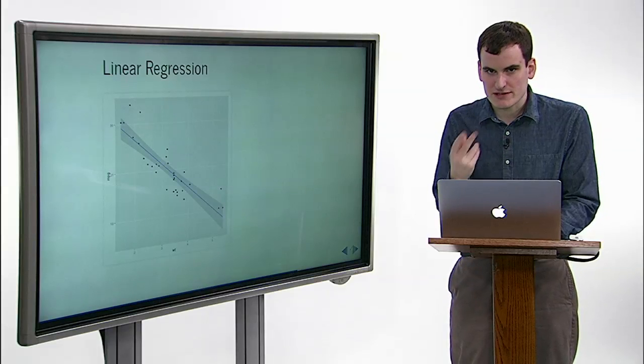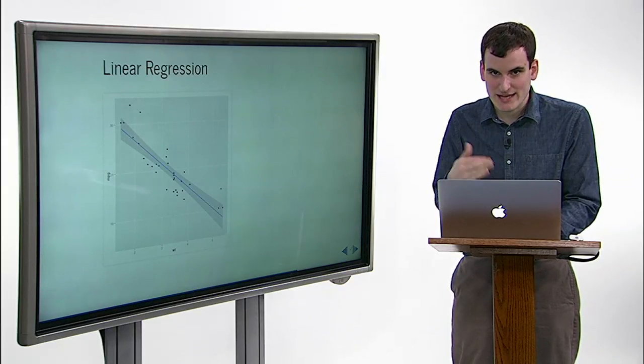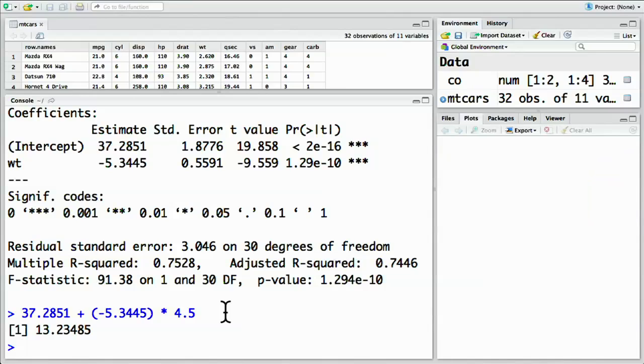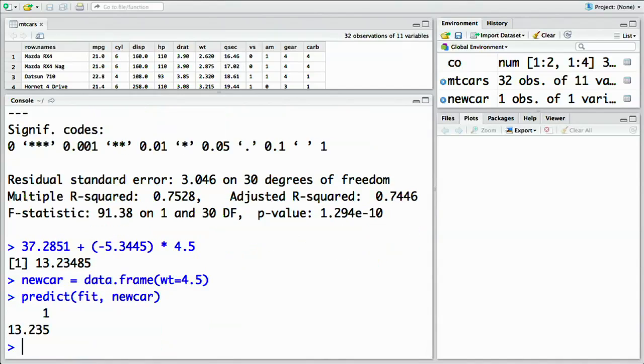Now, there's a shortcut for producing this value from the fit using the predict function. First, we create a data frame containing the predictors we wish to use. In this case, imagine we had a new car that was new car equals data.frame. Inside here, we put the weight, weight equals 4.5. Now that we've created this data frame, we do predict on both our fit and our new car. This calculates the same estimate, 13.235, predicting this car's miles per gallon using this fit.